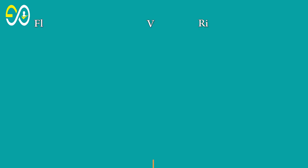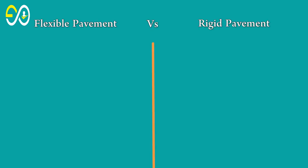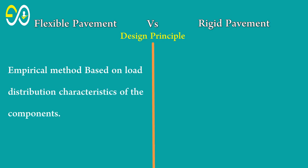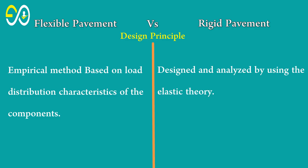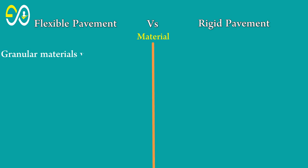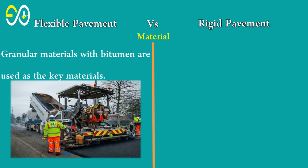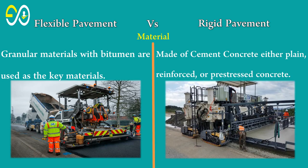Differences between flexible and rigid pavement: Flexible pavement is designed using an empirical method based on load distribution characteristics of the components, and analyzed using elastic theory. Granular materials with bitumen are used as key materials in flexible pavement, while rigid pavement is made of cement concrete — either plain, reinforced, or prestressed concrete.